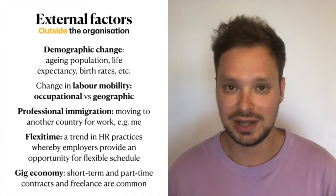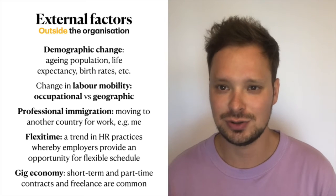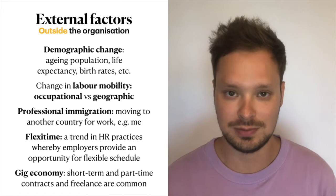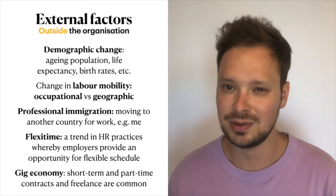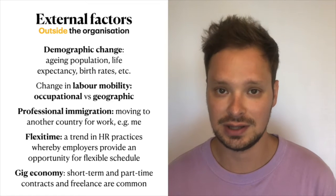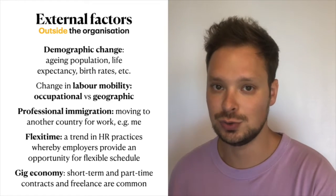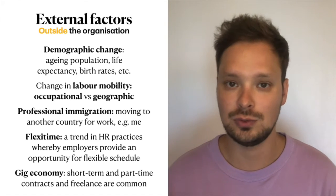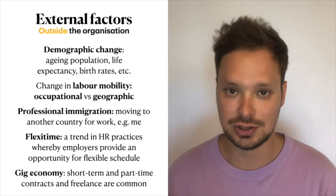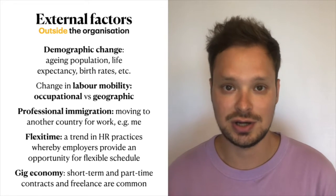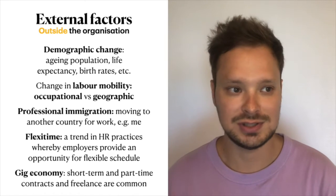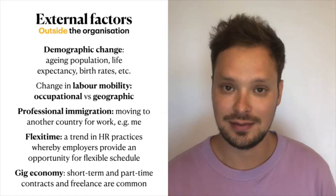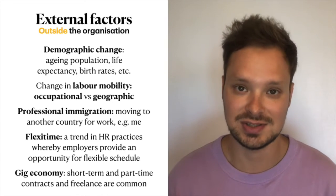The second external factor is labor mobility — the flexibility of labor in terms of certain aspects. Geographic labor mobility means that people can easily relocate within a country, for example in the USA and China. Occupational labor mobility means that people can easily change the nature of their jobs — for example, being a teacher for 10 years and then deciding to be an actor. If this career shift is really common in an economy, it indicates high occupational mobility.